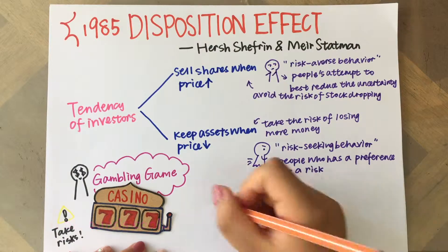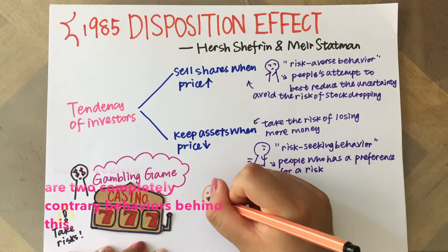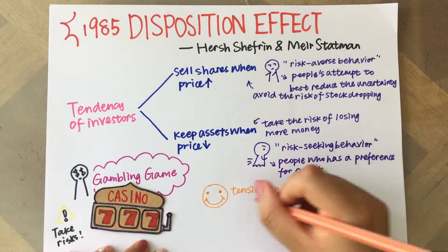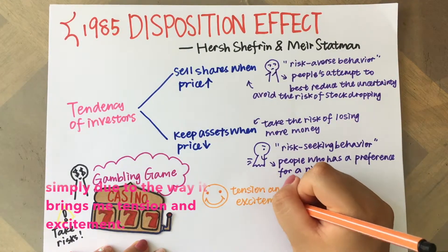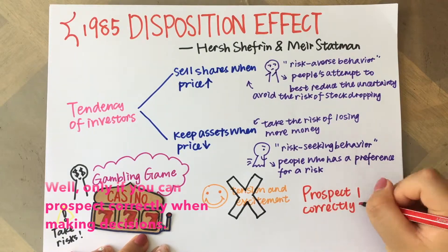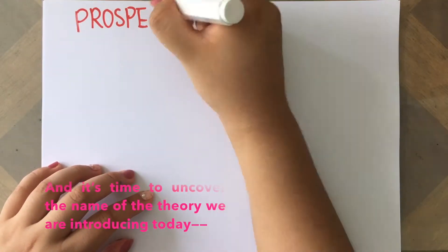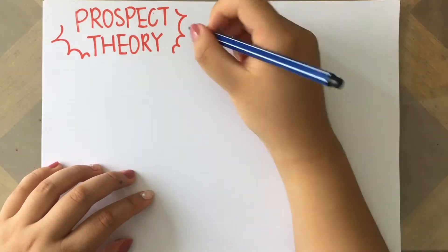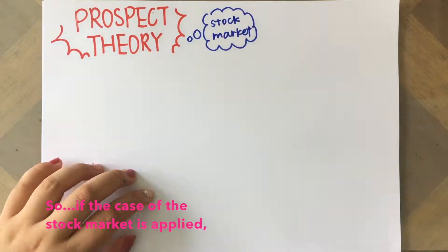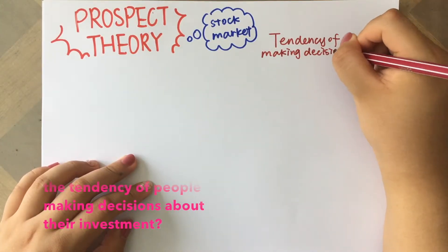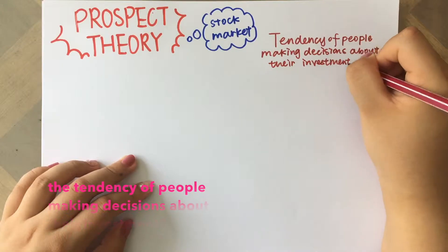I never realized that there are two completely contrary behaviors behind this. I think I love gambling simply due to the way it brings me tension and excitement. Well, only if you can prospect correctly when making decisions. And it's time to uncover the name of the theory we're introducing today — the prospect theory. So, if the case of the stock market is applied, is prospect theory about the tendency of people making decisions about their investment?